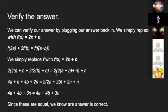So then we get 4a + n + 4b + 2n = 2(2a + 2b) + 2n + n. So then we get 4a + 4b + 3n = 4a + 4b + 3n if we simplify and combine some of the terms. Since both sides are equal, we know that our answer is correct because it holds.